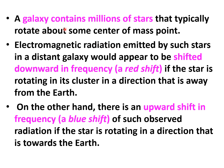Galaxies contain millions of stars rotating about a common center of mass. Electromagnetic radiation emitted by such stars appears shifted towards a lower frequency — redshift — if the galaxy or cluster is moving away from Earth. If it is moving towards Earth, we see a blueshift, an increase in frequency. Since most stars appear red, they are all moving away from us, which supports the theory of the expanding universe.